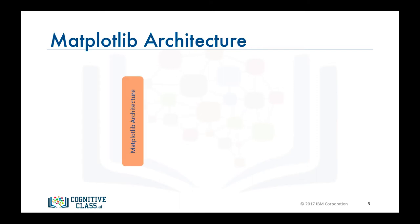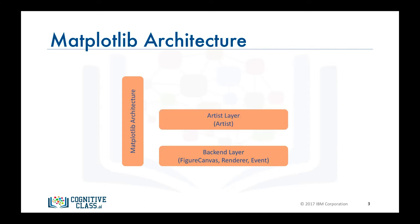Matplotlib's architecture is composed of three main layers: the backend layer; the artist layer, where much of the heavy lifting happens and is usually the appropriate programming paradigm when writing a web application server, a UI application, or a script to be shared with other developers; and the scripting layer, which is the appropriate layer for everyday purposes and is considered a lighter scripting interface to simplify common tasks and for quick and easy generation of graphics and plots.